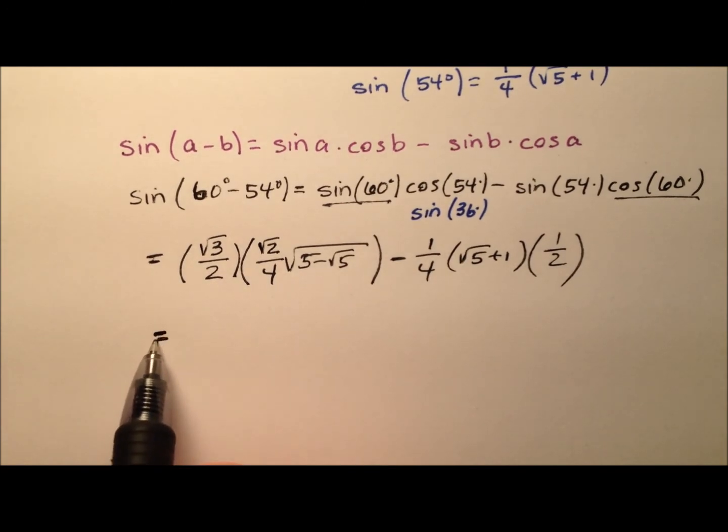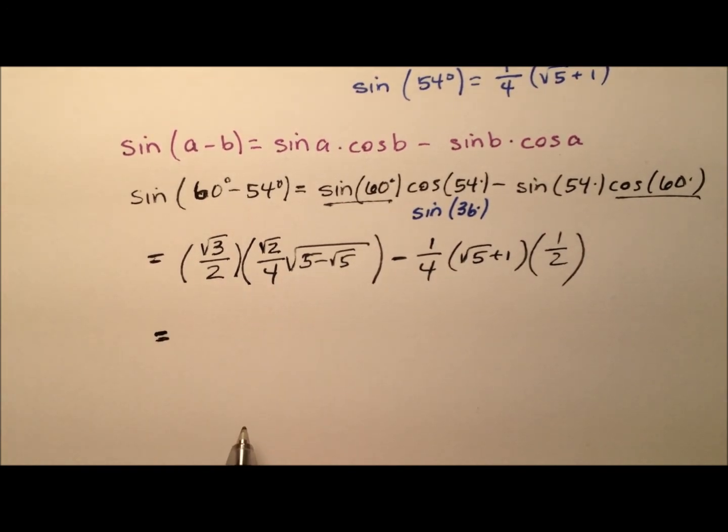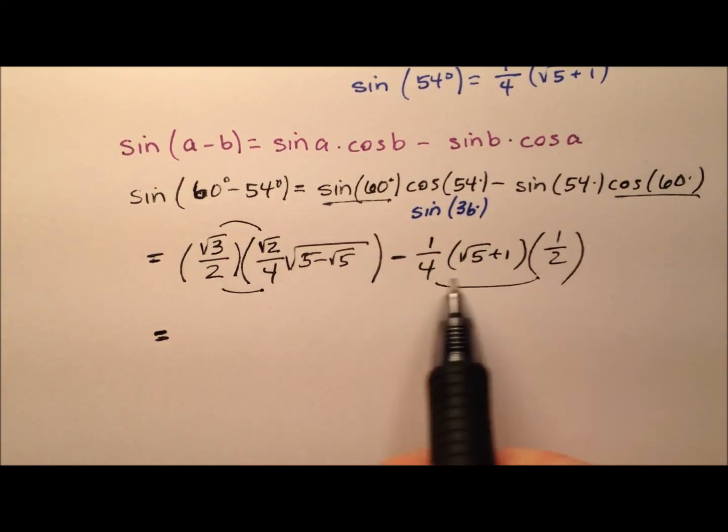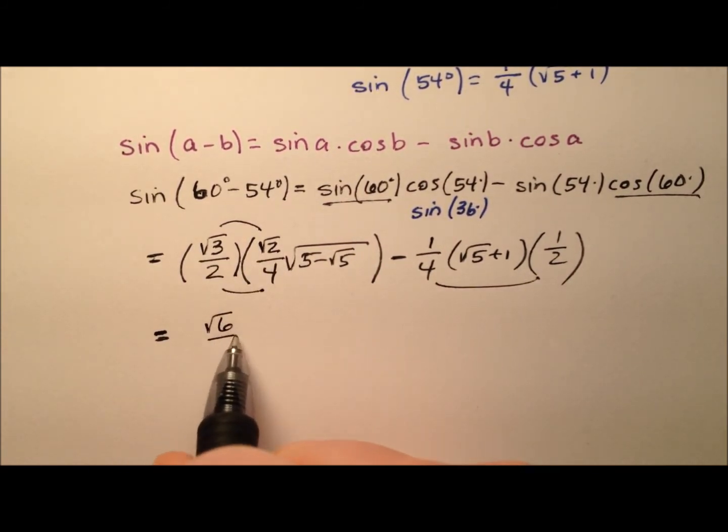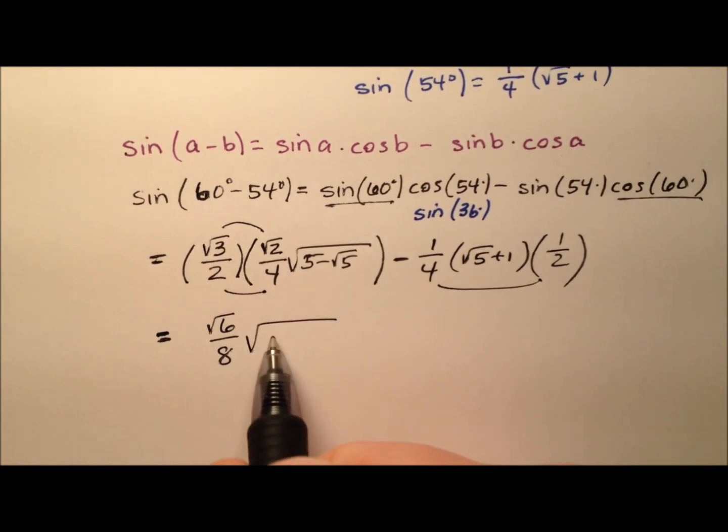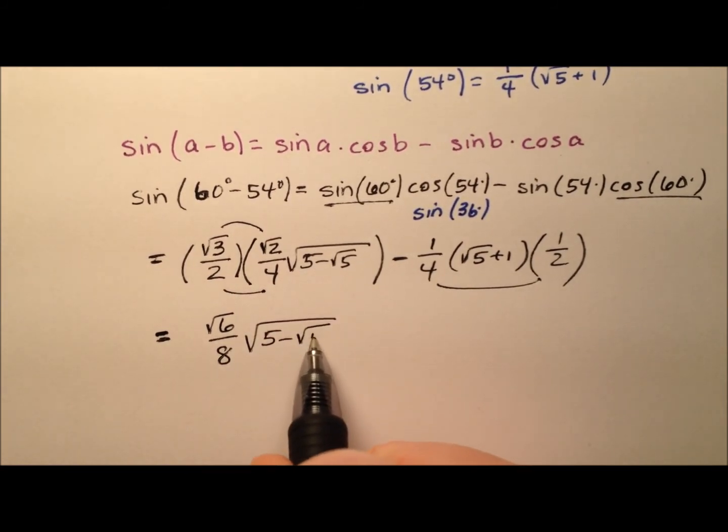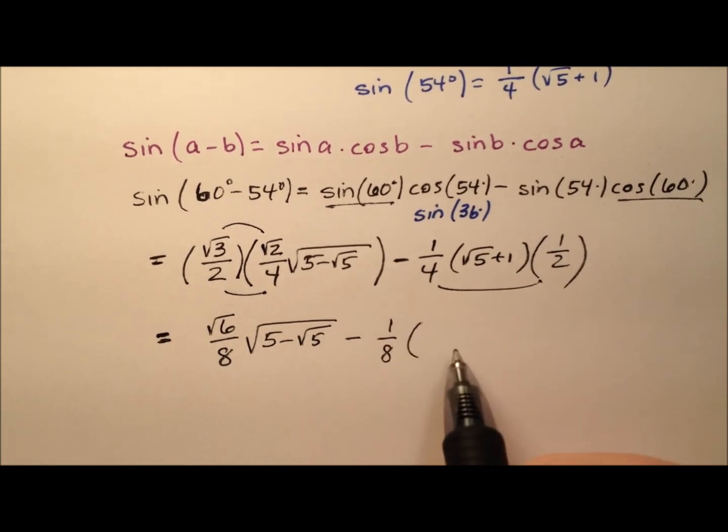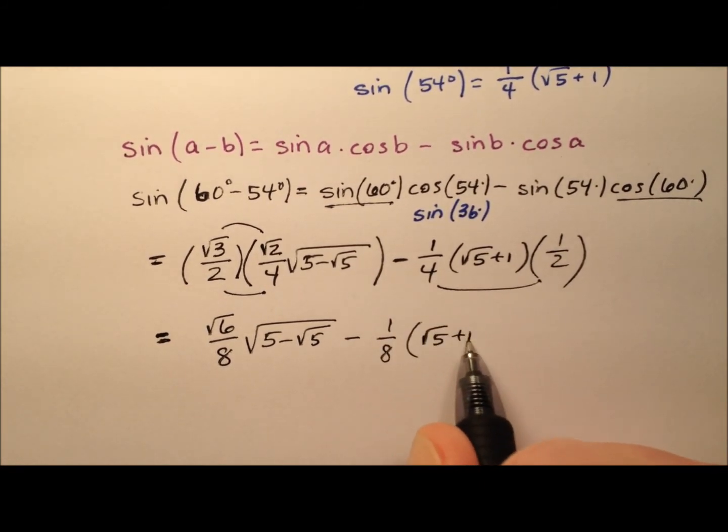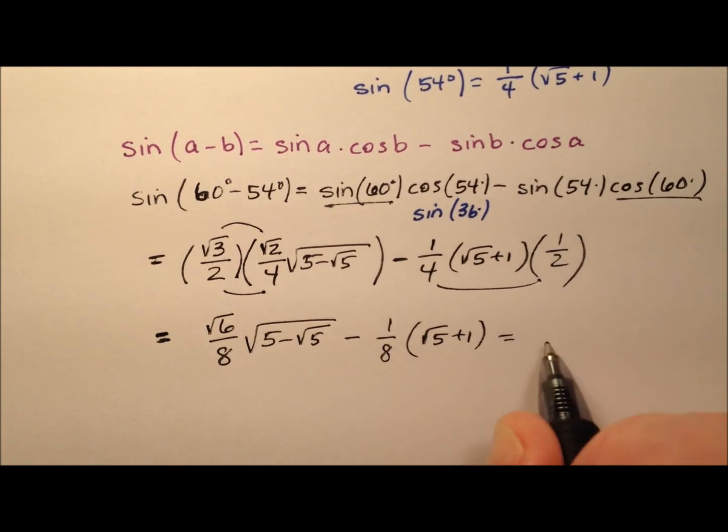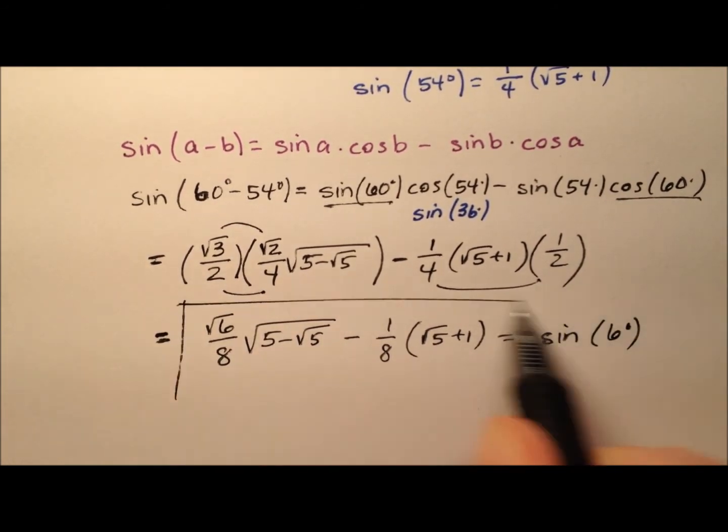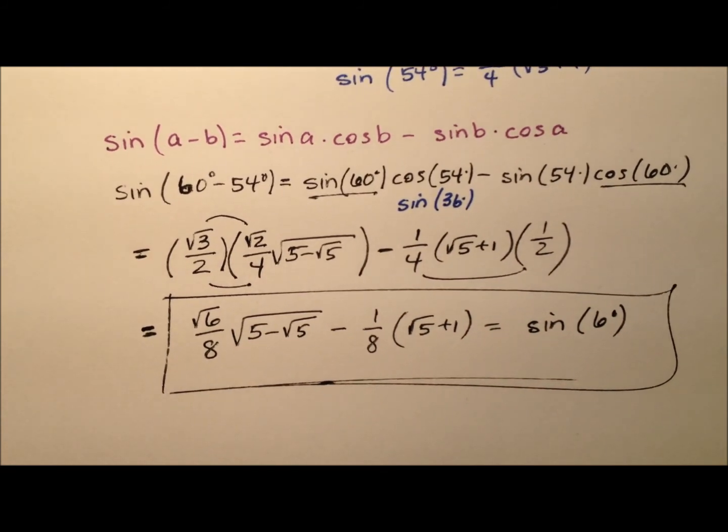So this isn't so bad. There's a few things we could consider doing. Let's go ahead and multiply here first, and then we can multiply here. So it looks like we'll have the square root of 6 over 8, and then times this square root expression, minus, and it looks like 1 eighth times the square root of 5 plus 1. So that looks like a pretty good expression here for the sine of 6 degrees.